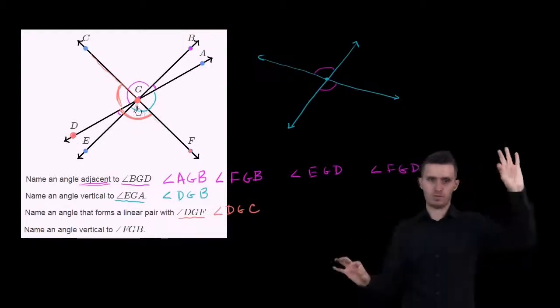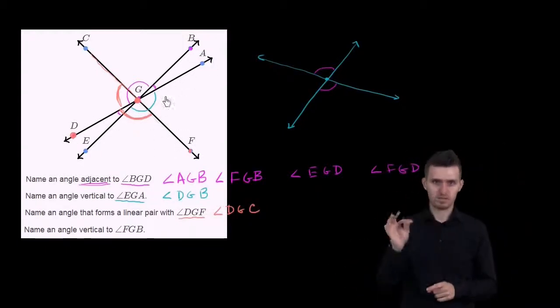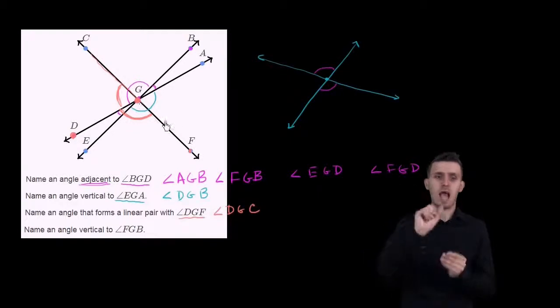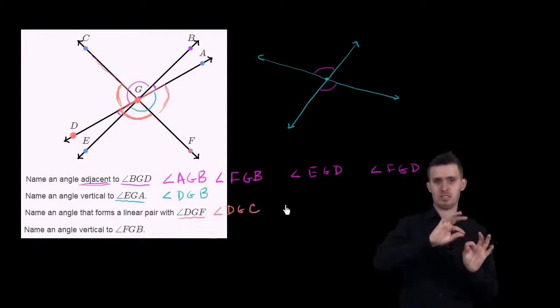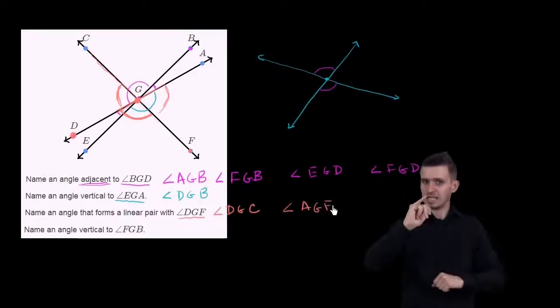Or if you look at angle DGF, you could form a line this way. If you take angle AGF, then the outer rays will form this line. So angle AGF would also work.